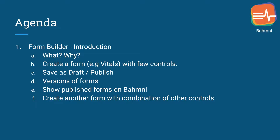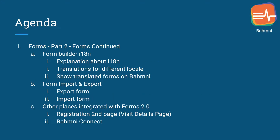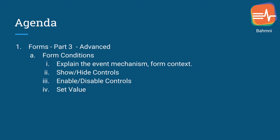We will also create another form to describe different types of controls supported in form builder. The second video will cover form internationalization, form import and export, and integration with different places like registration, visit details page, and Bahmni Connect. The last video will cover form conditions — writing JavaScript functions to enable, disable, show, or hide controls and set values to a particular control.